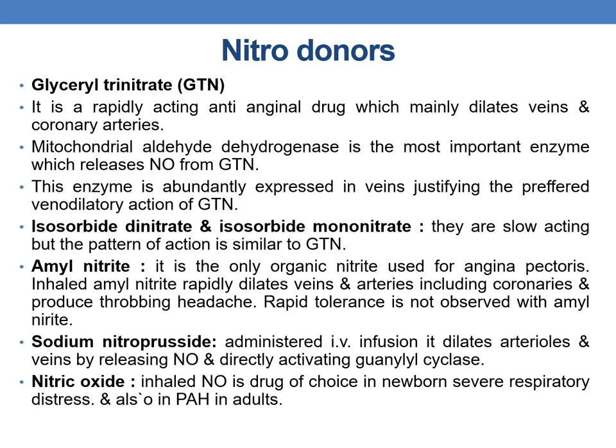Isosorbide dinitrate and isosorbide mononitrate are slow-acting with a similar pattern of action to GTN. Amyl nitrite is the only organic nitrite used for angina pectoris; inhaled amyl nitrite rapidly dilates veins and arteries including coronaries, producing throbbing headache, and rapid tolerance seen with organic nitrates is not observed with amyl nitrite. Sodium nitroprusside is administered intravenously and dilates arterioles and veins by releasing nitric oxide and directly activating guanylyl cyclase. Inhaled nitric oxide is the drug of choice in newborn severe respiratory distress and pulmonary arterial hypertension in adults.